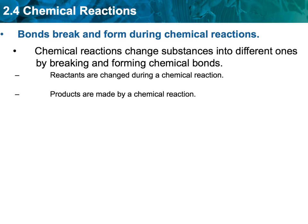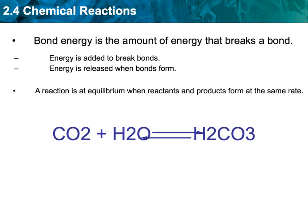Reactants are the things that start the reaction — they go into the reaction and are the ones that are going to be adjusted or changed. The result we get from the reactants is what's called the product. The energy required to separate or break a bond is called bond energy.